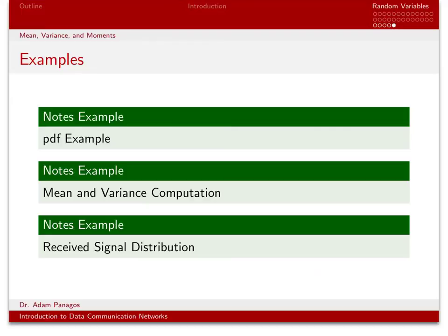So we've been talking about probability density functions, cumulative distribution functions, Gaussian random variables, mean, variance, and all kinds of interesting things. The next few examples will get some practice working with these quantities. We'll do an example with the Gaussian PDF computing probabilities, then compute the mean and variance for toy PDF examples, and finally work a problem relevant to digital communications — analyzing how a received signal's random distribution informs how our receiver should make choices in demodulating or receiving that data.